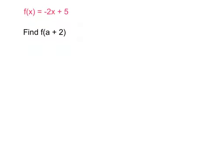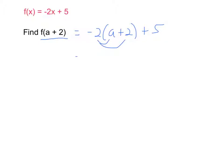Sometimes we're asked to find something like f of a plus 2. In this case, the whole expression inside the parentheses — which is a plus 2 — gets substituted in where x is in the function. So we'd write: f of a plus 2 equals negative 2 times (a plus 2) plus 5. Then we distribute: negative 2a minus 4 plus 5. Combining like terms gives us negative 2a plus 1 as the final answer.